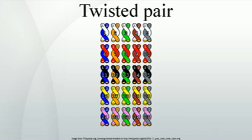The twist rate, also called pitch of the twist, usually defined in twists per meter, makes up part of the specification for a given type of cable. Where nearby pairs have equal twist rates, the same conductors of the different pairs may repeatedly lie next to each other, partially undoing the benefits of differential mode. For this reason it is commonly specified that, at least for cables containing small numbers of pairs, the twist rates must differ.